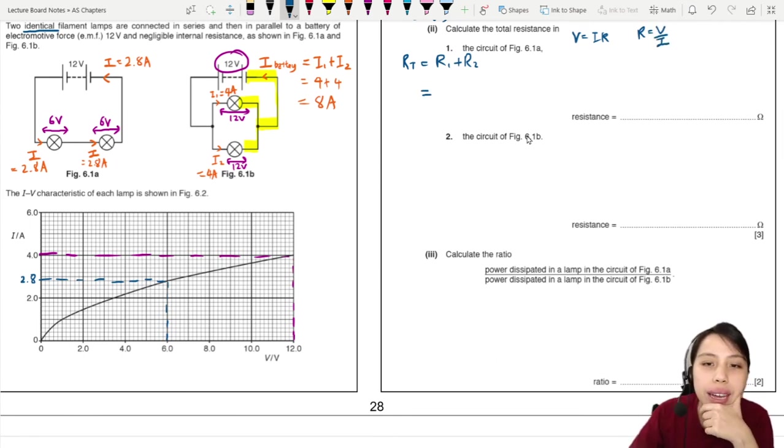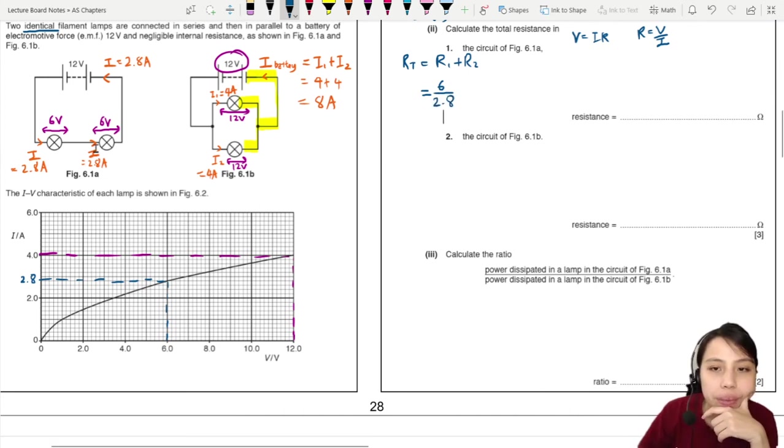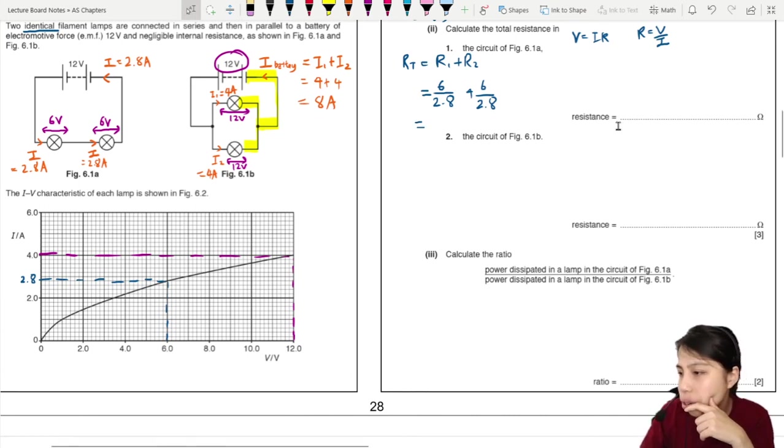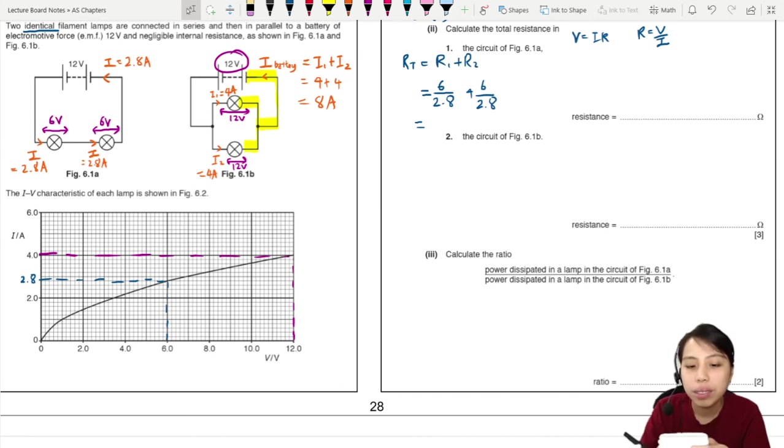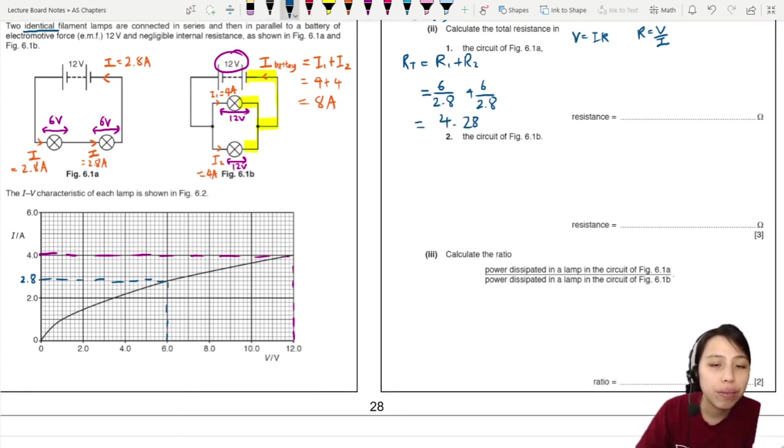So for the first lamp, what's the V? Six volts over 2.8. Then for the second lamp on this left side, six also. Six over 2.8. And that should give us a total of 6 divided by 2.8, 4.3, or rather 4.2857. Final answer, you only need to have two SF since all values were given in two.